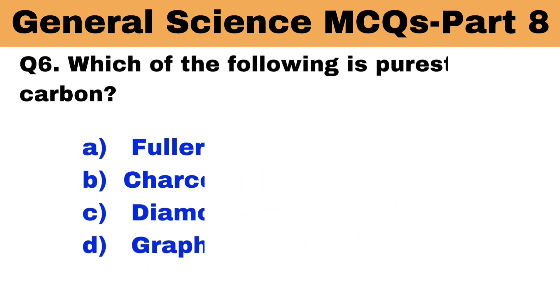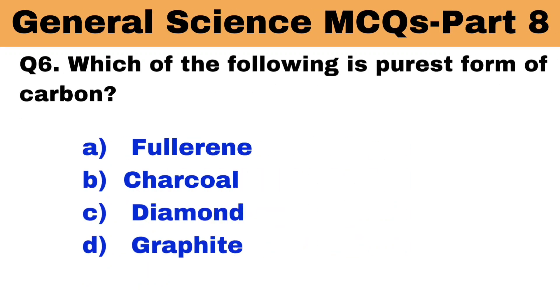Question number 6. Which of the following is the purest form of carbon? The right answer is option A: fullerene.